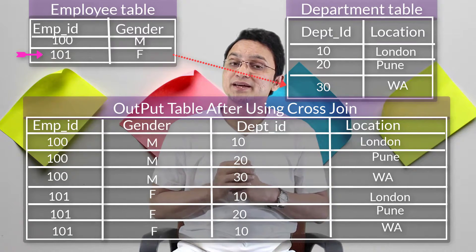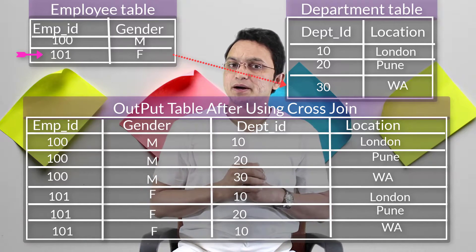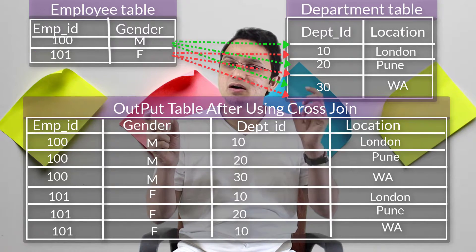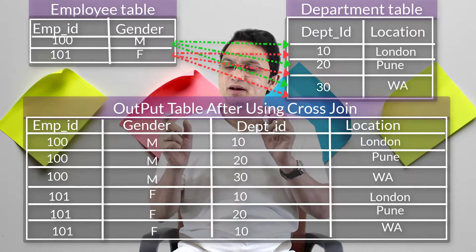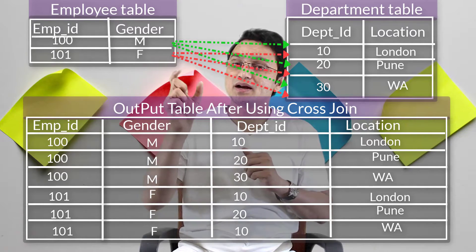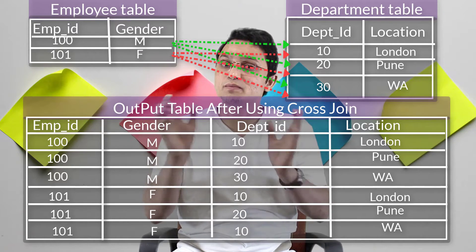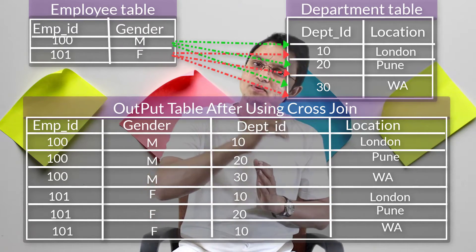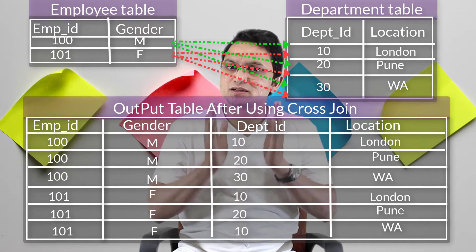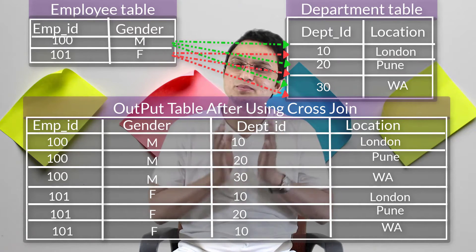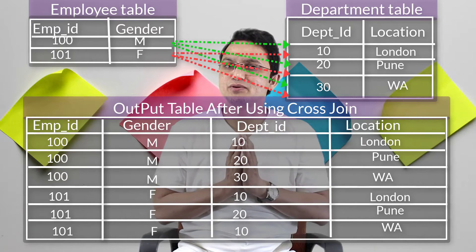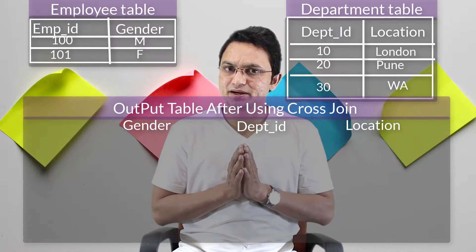In short, the first row of the employee table joins with all rows of the department table to form that many output rows. Then the pointer moves to the next row of the employee table, which again joins with all rows of the department table, and so on until all rows in the employee table are finished. This is how the cross join works and how the output table is formed. This is the consolidated view of the table formation.